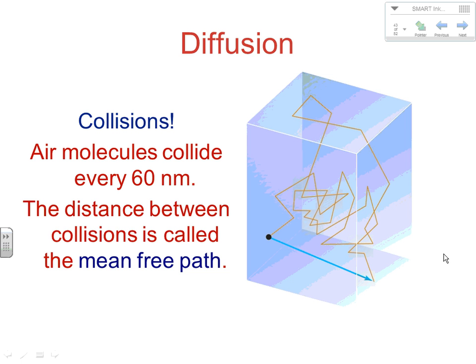The distance between collisions is known as the mean-free path — on average, how far are you free to move before you collide with something? Obviously, if we had fewer gas particles, the mean-free path would be larger and things would diffuse faster. Diffusion and effusion are really tied to the speed of the particles: the faster they're moving, the faster they're going to diffuse and the faster they're going to effuse.